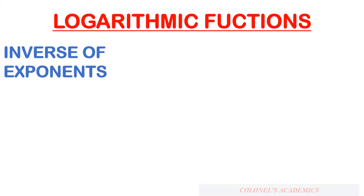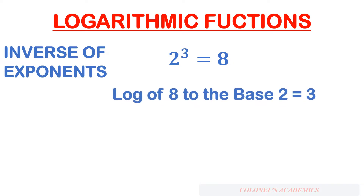Let us try and understand this. Suppose we have an expression 2 to the power of 3 is equal to 8 — that means we multiply 2 three times and what we get is 8. So the log of 8 to the base 2 would be equal to 3. If you have 2 to the power of 3 is equal to 8 in exponential form and you want to convert this into logarithmic form, what we get is log of 8 to the base 2 is equal to 3.